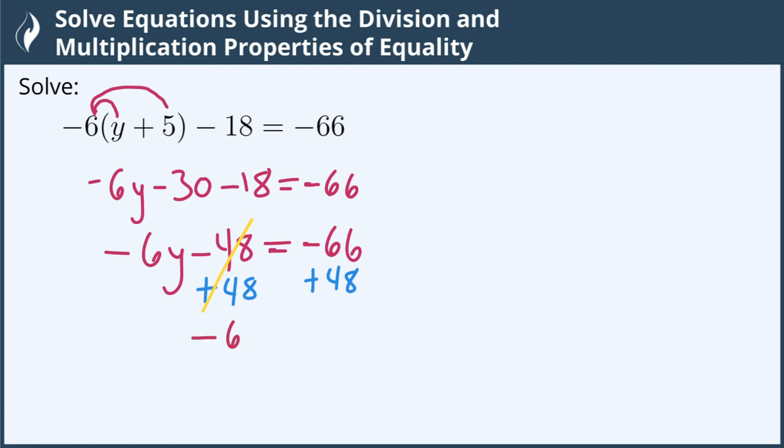leaving me with just negative 6y on the left-hand side. On the right-hand side, negative 66 plus 48 is going to end up being negative 18.